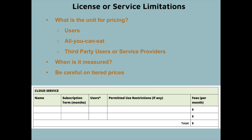Now we get to the real meat of an order form: the license or service limitations. With cloud services, you usually have some unit for pricing — typically the number of users or an all-you-can-eat plan for everyone in the company. You may also want to provide for third parties to use the service on the customer's behalf, like their customers or vendors, and you should be specific about that. Otherwise the contract will say only the customer entity can use the service. You should also be clear about how often the unit is measured — for instance, if monthly, whether that's at the beginning or end of the month.